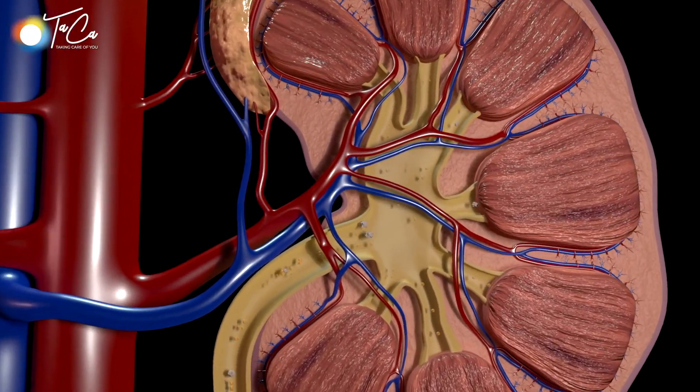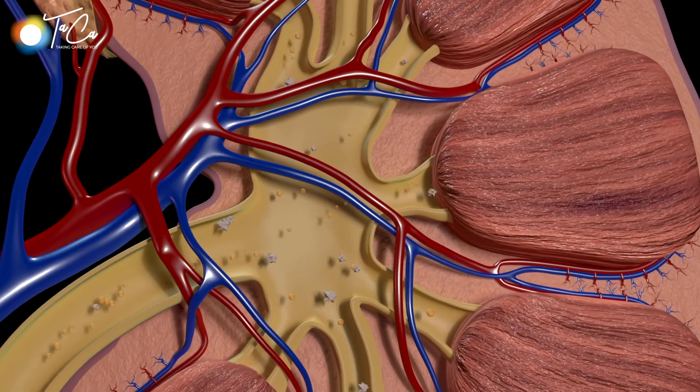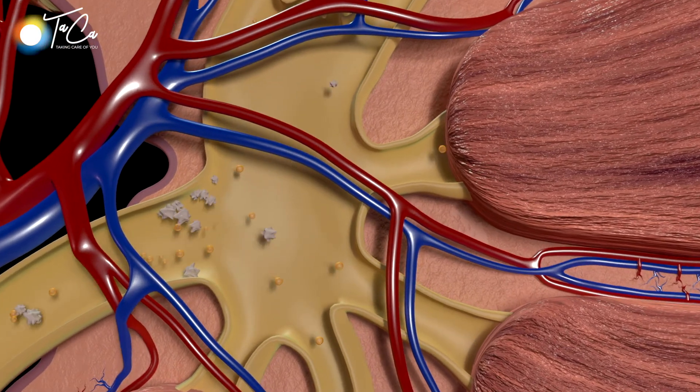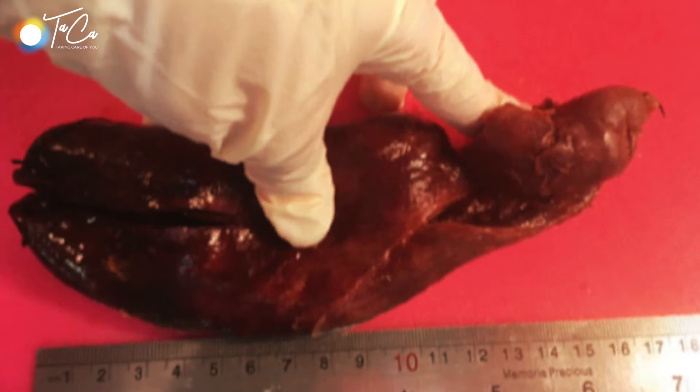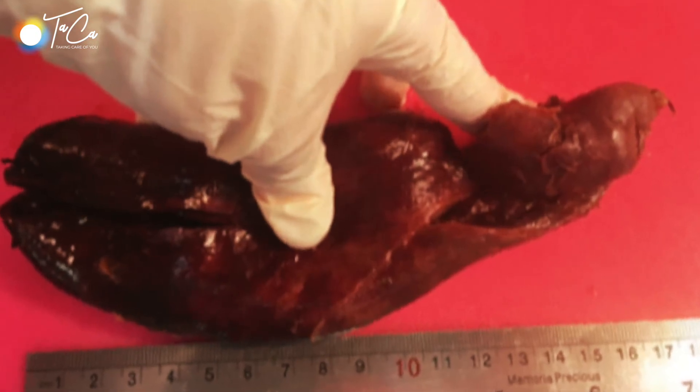Urinary stones and kidney stones can be removed on their own — that particular stone can be removed. But in gallstones, we don't remove the stone; we usually remove the entire gallbladder. Because unless and until we remove the pathology, we cannot completely treat the disease. The pathology here is the gallbladder wall, so we have to remove the entire gallbladder wall. Then only can we achieve a complete cure of gallstones.